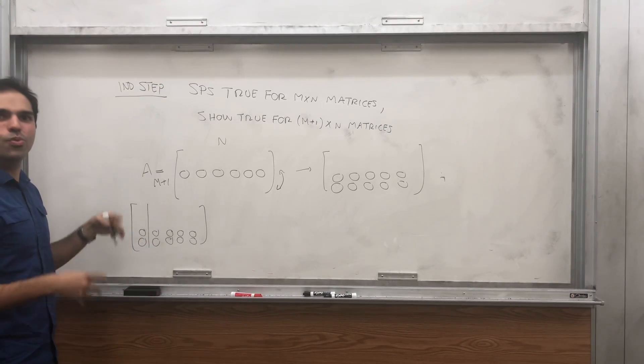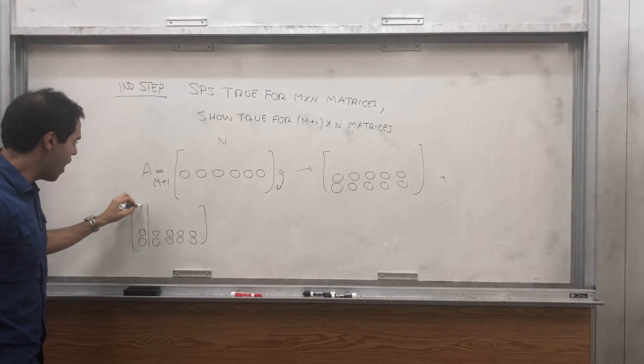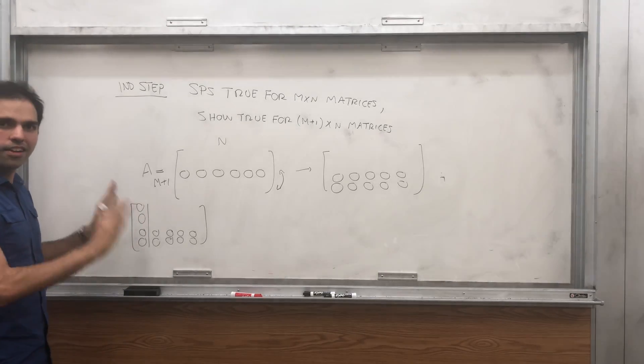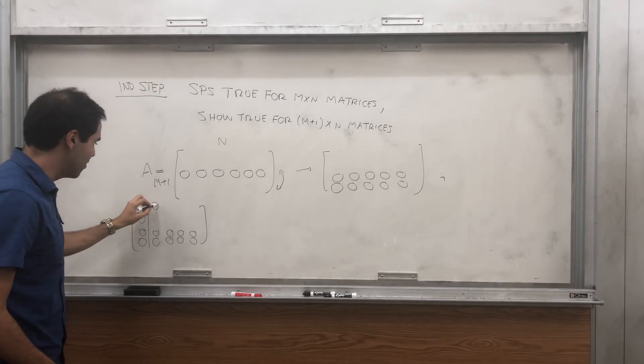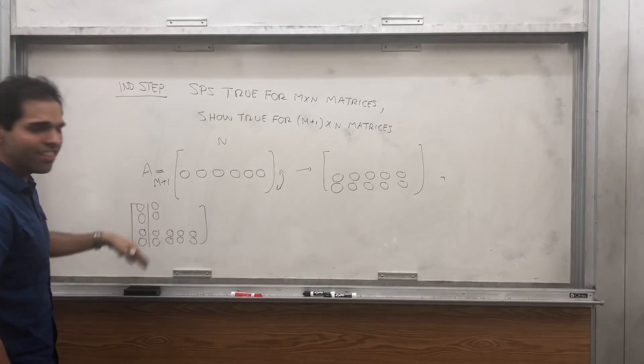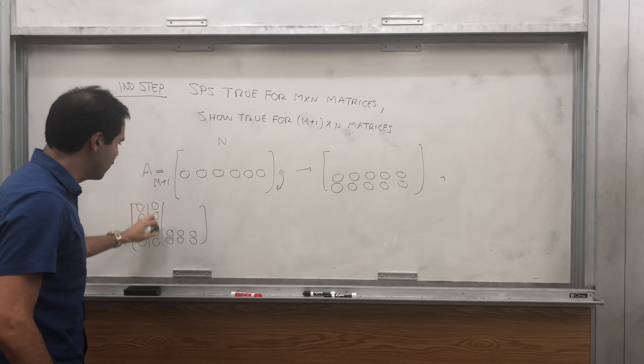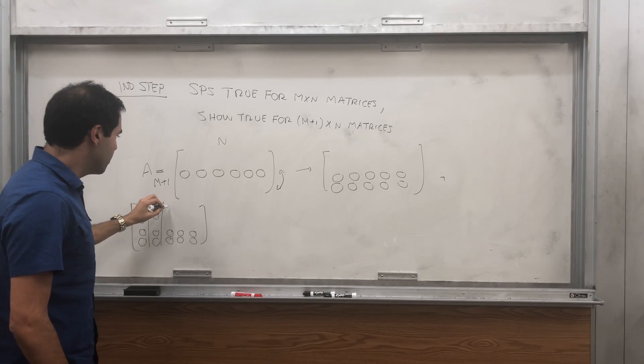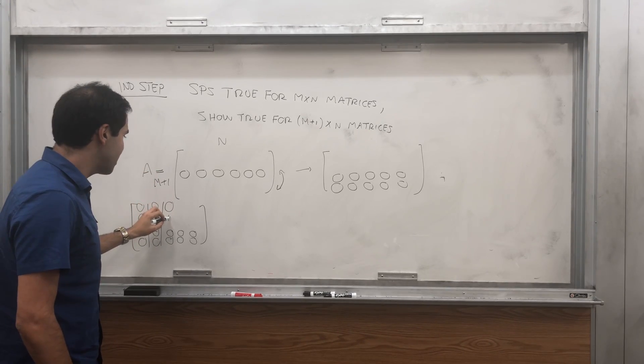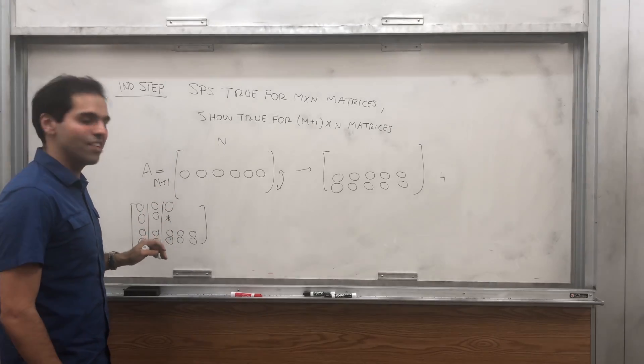And suppose worst case scenario, everything is zero. Not a problem. Move on to the second column. If everything else is zero, it's okay. Move on, until you find the first entry which is non-zero.